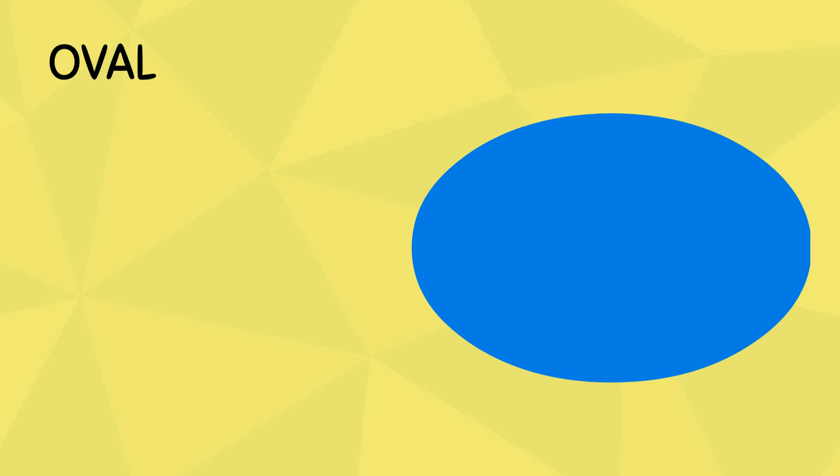an oval. An oval looks like a circle but is longer and stretched out. Similar to a circle, it has